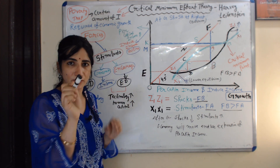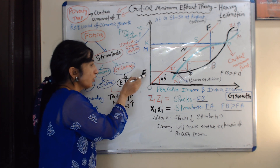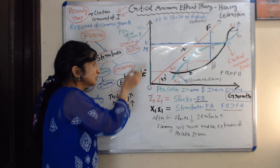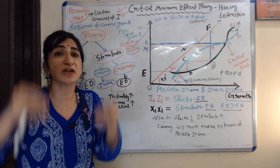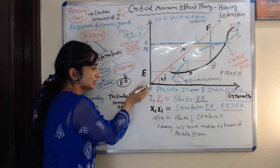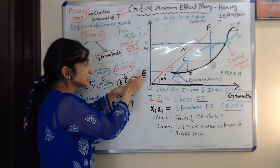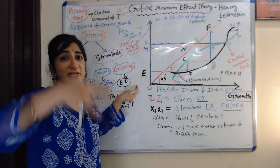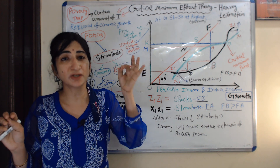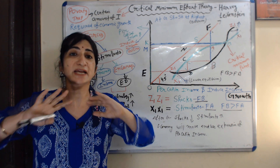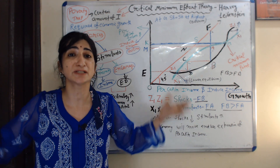If an underdeveloped country does investment equal to critical minimum effort, income will increase from OE to OK. On the other hand, if a country does investment below the critical minimum effort, income will increase from OE to OM. If investment equals critical minimum effort, income increases OE to OK; if below, income increases OE to OM. But most importantly, investment below the critical minimum effort is not beneficial for the country — why?